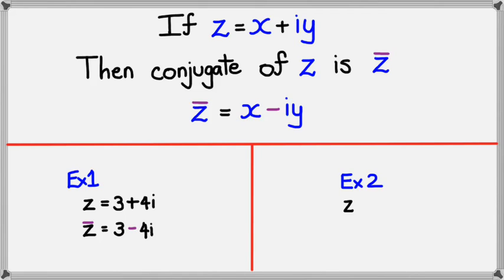Having a look at another example, if z equals negative 2 minus 3i, then the conjugate of z would be negative 2 plus 3i. And once again, you can notice it's just the imaginary parts that will be changing its symbol.